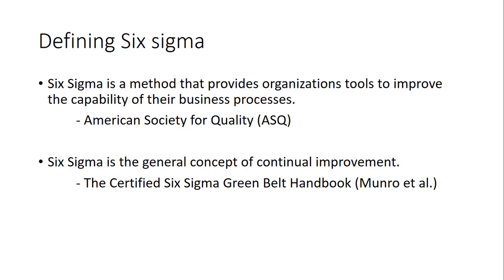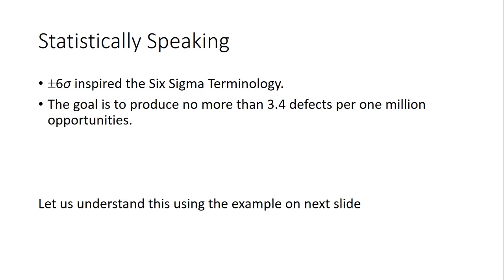DMAIC stands for: D — Define, M — Measure, A — Analyze, I — Improve, and C — Control. The Certified Six Sigma Green Belt Handbook, second edition, written by Munro, Ramu, and Srimayak, refers to Six Sigma as the general concept of continual improvement.